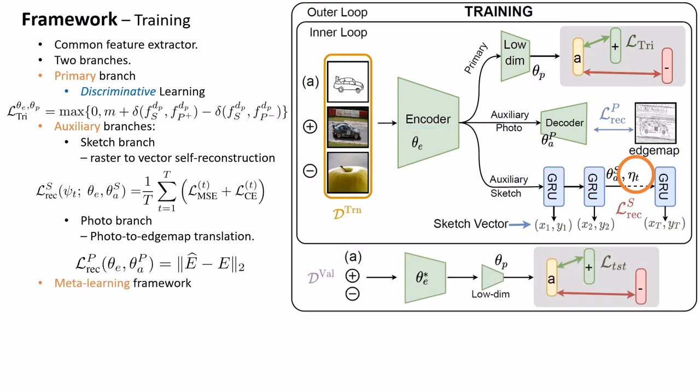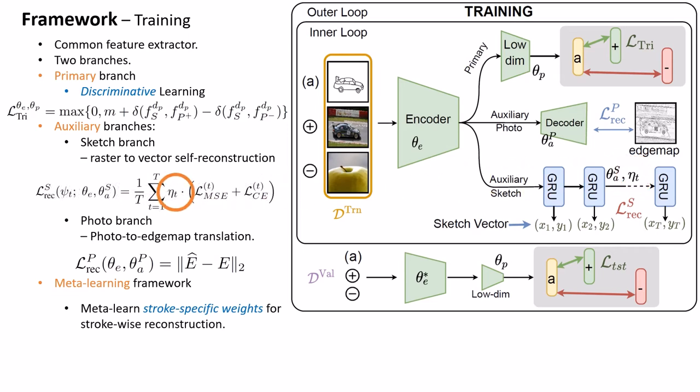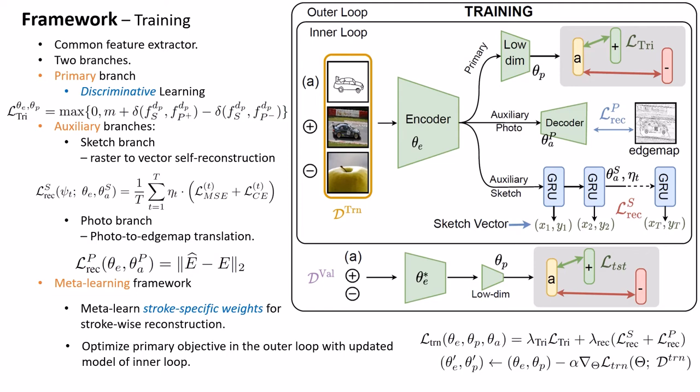The entire training is wrapped in a meta-learning framework which involves two loops. The stroke-specific weights are meta-learned along with the triplet and reconstruction objectives in the inner loop to pseudo-update the model in a way that minimizes the primary triplet loss in the outer loop, thus helping to quickly adapt to new sketches and conditioning the model's latent space to be robust against distortion from new cross-modal data.